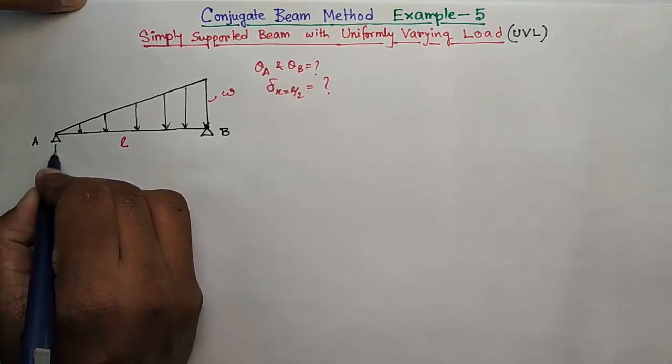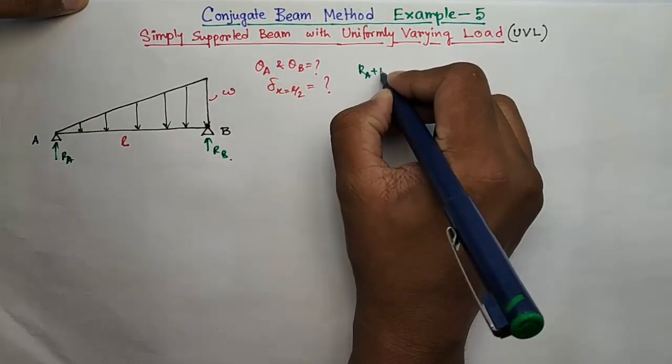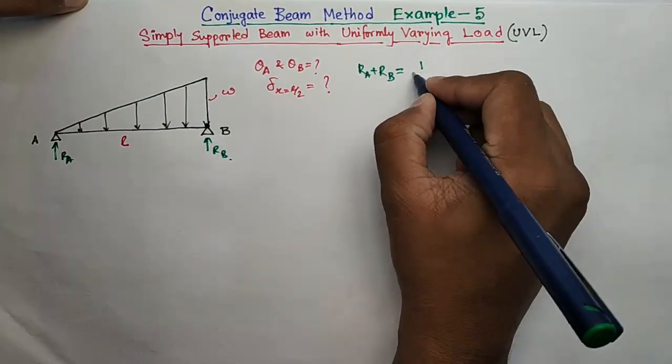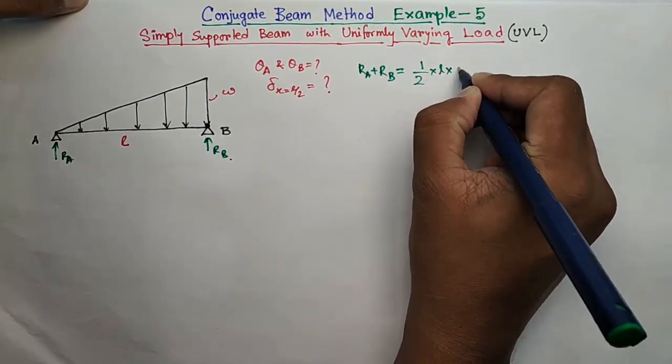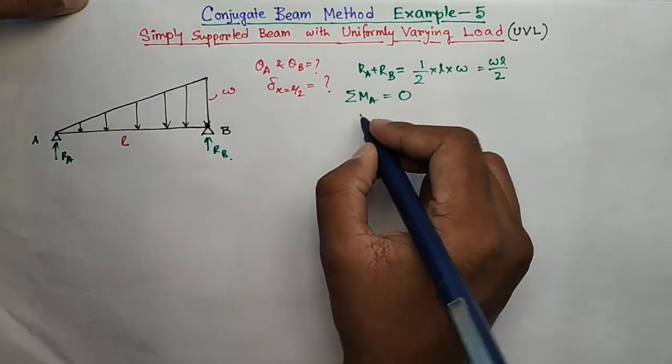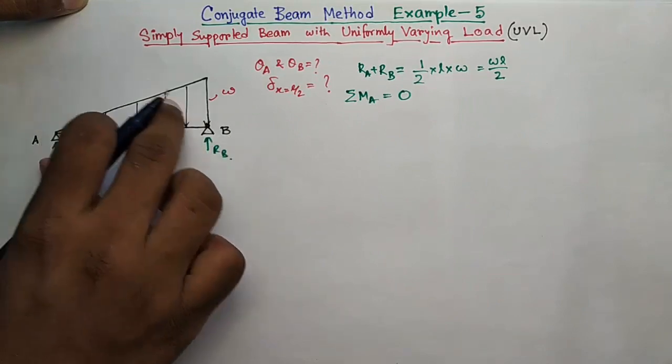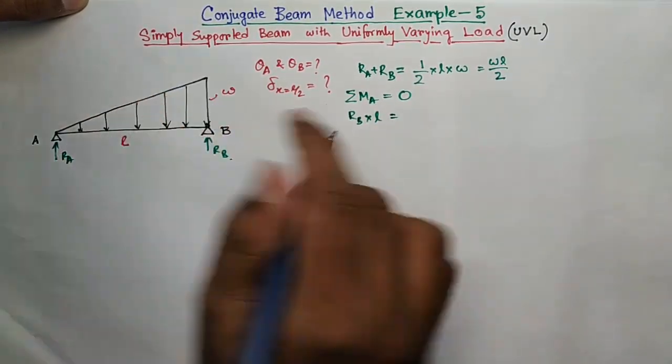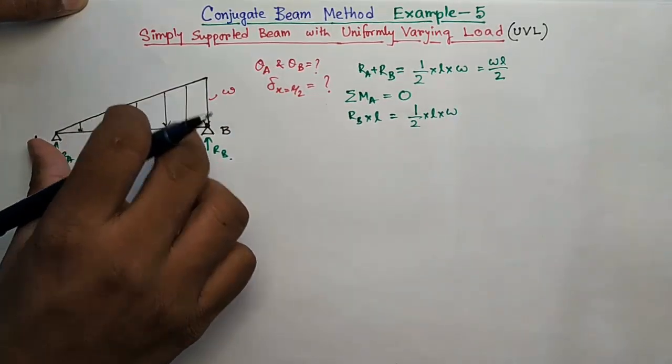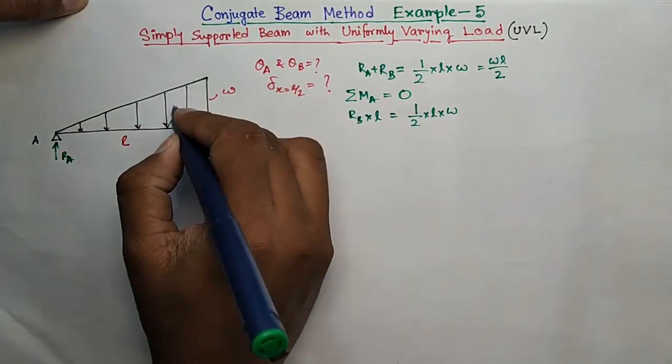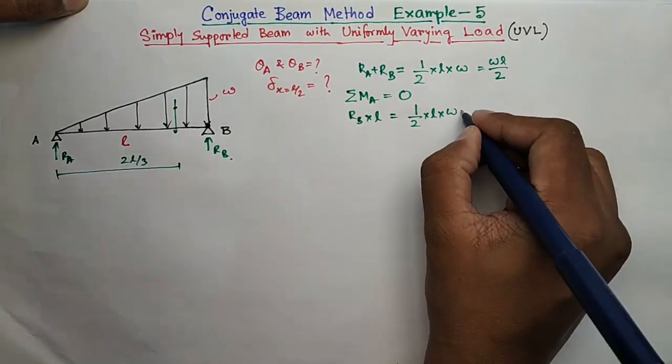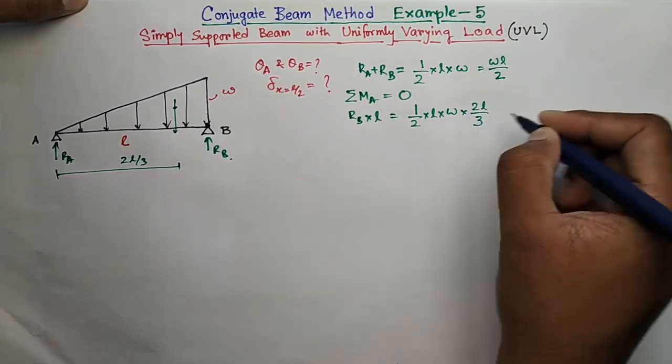First, find out RA and RB. Summation of RA plus RB will be equal to the area of this triangle, which is half into L into W. Take moment about point A equals to zero. So RB into L will be equal to this force, half into L into W, into the CG distance. The CG distance will be here, this distance will be L by 3.